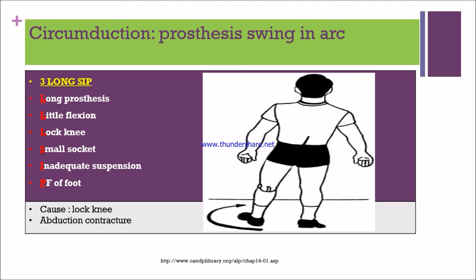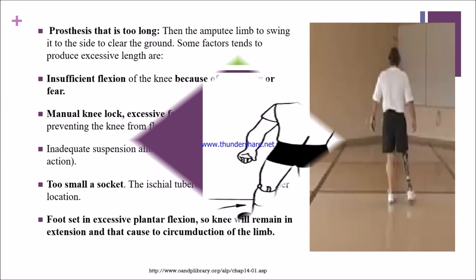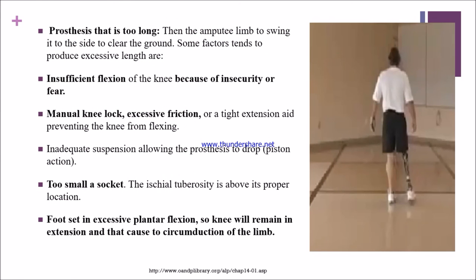To remember the causes, use the mnemonic '3 long zip': 3L means long prosthesis, very little flexion, and lock knee. If the socket is small, there is inadequate suspension or plantar flexion of the foot.